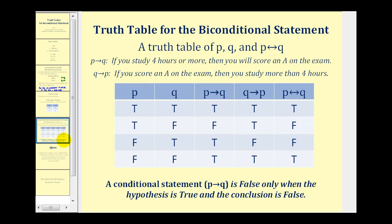Here we want to complete the truth table for p, q, and p if and only if q. So to do this, what we're going to do is create a table with p, q, if p then q, and then if q then p.